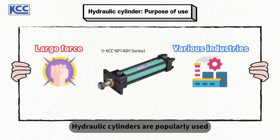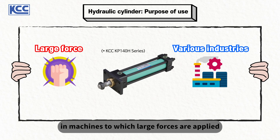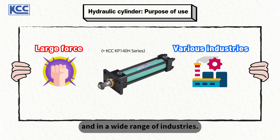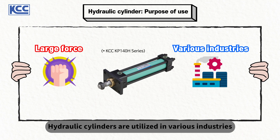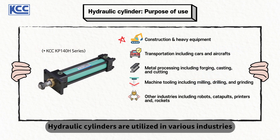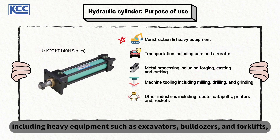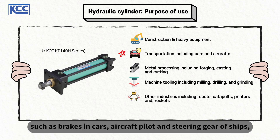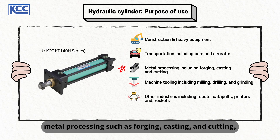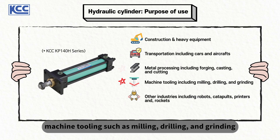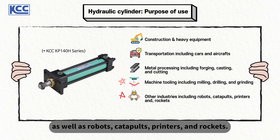Hydraulic cylinders are popularly used in machines to which large forces are applied and in a wide range of industries. They are utilized in various industries, including heavy equipment such as excavators, bulldozers and forklifts, transportation such as brakes in cars, aircraft pilots and steering gear of ships, metal processing such as forging, casting and cutting, machine tooling such as milling, drilling and grinding, as well as robots, catapults, printers and rockets.